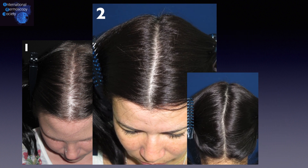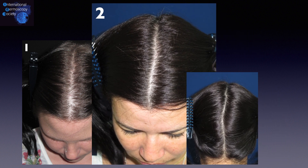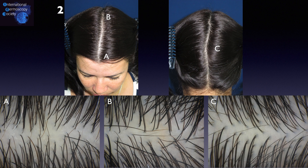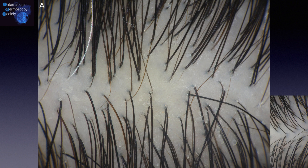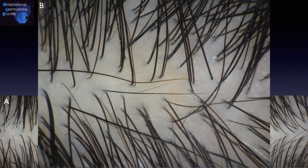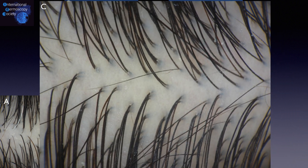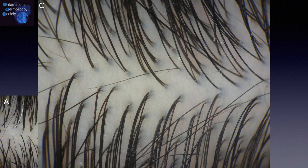In the second case, we can see many short hairs along the middle hairline. We will compare the same three areas as in the previous case. In the frontal area, we have good hair density and few thin hairs. In the vertex area, we have almost the same hair density and a lot of upright regrowing hairs, as also seen here in the occipital area.